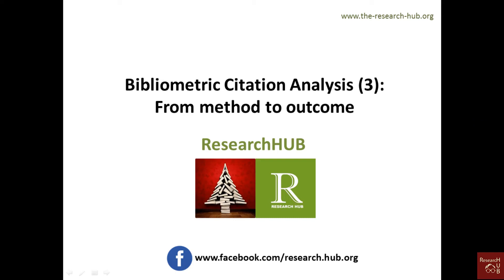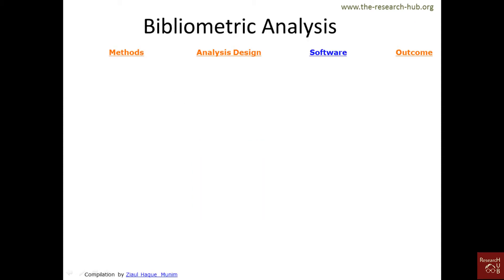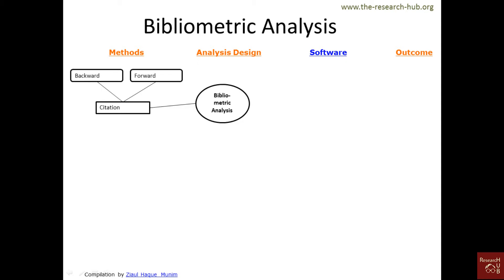In this video we'll see the bibliometric citation analysis process in detail, starting with the method and ending with outcome, followed by analysis design and software. The simplest bibliometric analysis technique is citation analysis, which is basically the counting of citations of an article, and it could be two types.